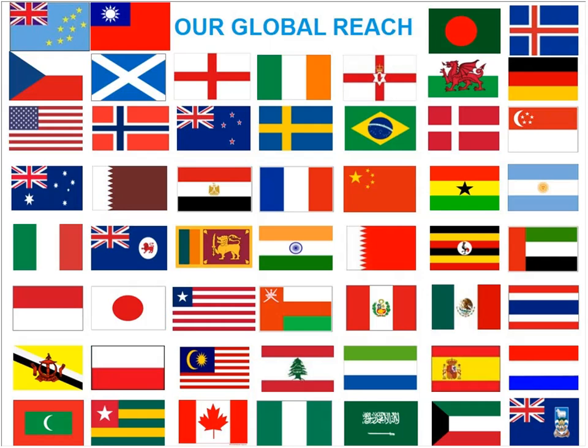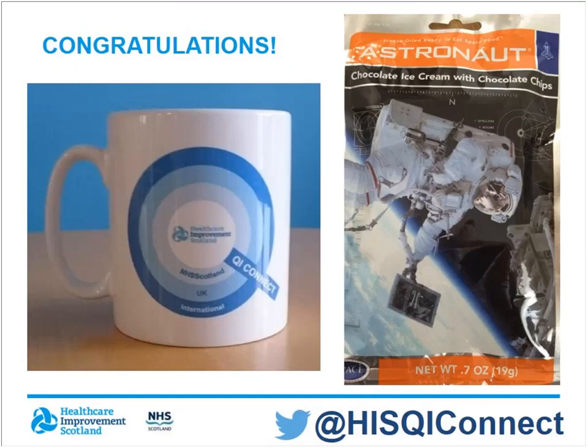Today there are two amazing prizes. The country we want you to identify is the flag of Bahrain. Well done, Stuart Duncan — congratulations on getting us to Bahrain! Stuart's an improvement advisor at the Scottish Government. You'll be delighted to hear you've got a couple of prizes coming your way: the much-desired QI Connect mug and a special supply of chocolate ice cream as used by astronauts. Congratulations, Stuart, for identifying Bahrain.